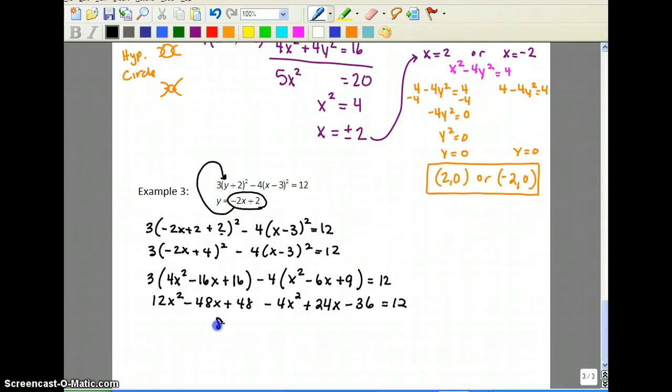So we end up with 8x squared minus 24x plus 12 equals 12. Well we know how to solve quadratics, but they have to be equal to 0. So you should subtract your 12 and get 8x squared minus 24x equals 0. Now what are the ways we know how to solve quadratics?